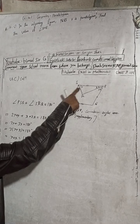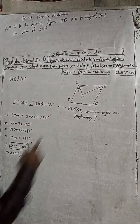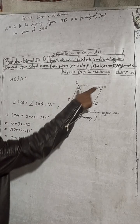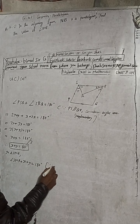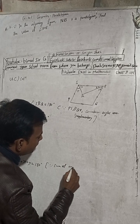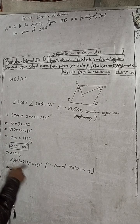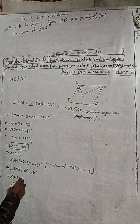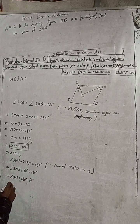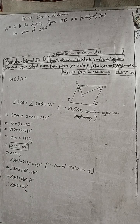Now in the triangle, we have to find angle SMR. Using the angle sum property of a triangle — the sum of all angles in a triangle is 180 degrees — and substituting x plus y equals 60 degrees, we get angle SMR plus x plus y equals 180 degrees, so the answer is 60 degrees.